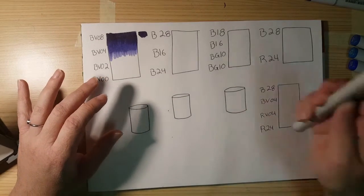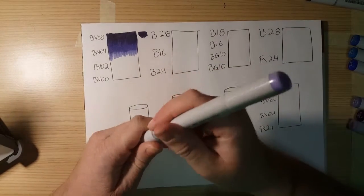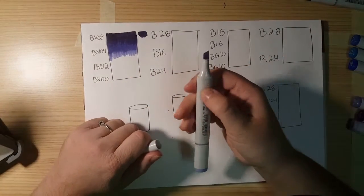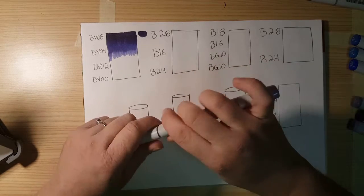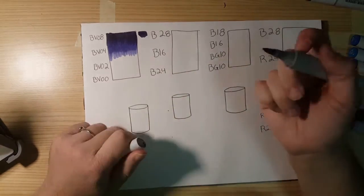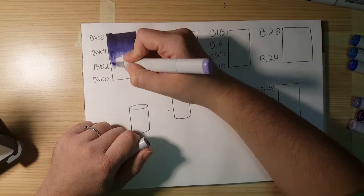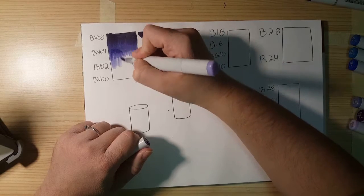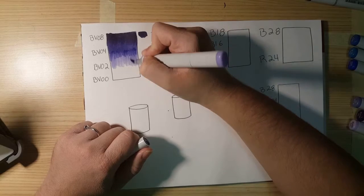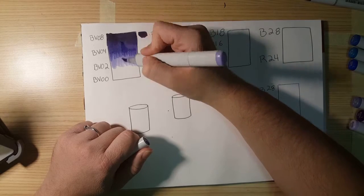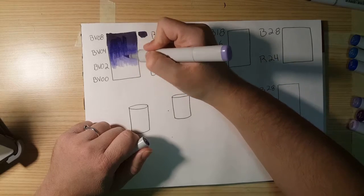And then we'll go in with my BV02. Some people like to use the chisel tips of these markers. I, however, prefer the brush tip. It helps with the kind of the flick motion that I use. And sometimes you kind of have to come back further to get it all to blend nicely.